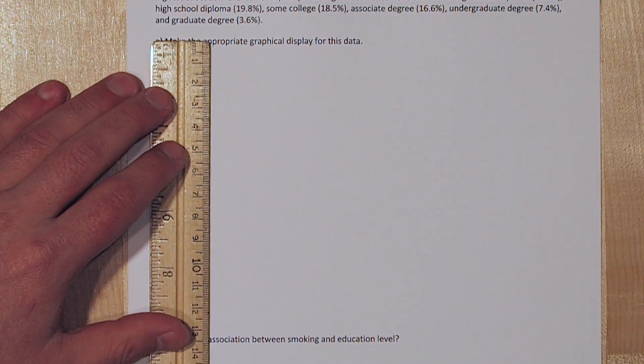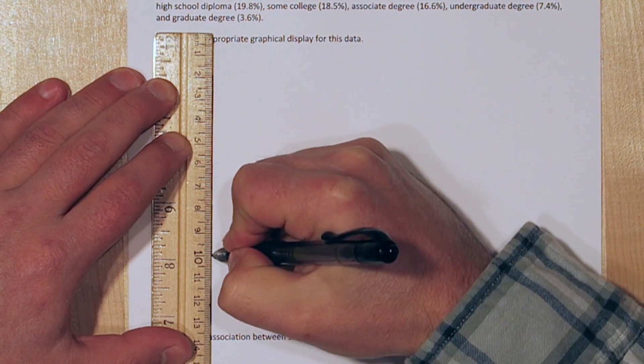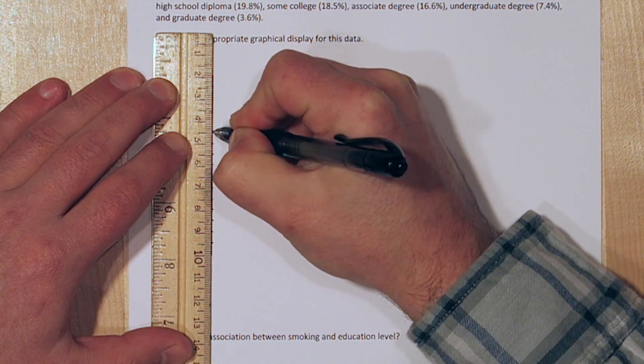Highest education level achieved is a categorical variable, so a bar graph would be a good candidate here.